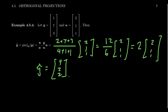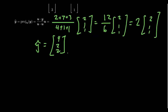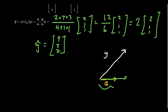So the orthogonal projection y-hat is the vector [4, 2, 2]. Drawing the picture: we have vector y, vector u, and y-hat is twice as long as u in that direction. This forms a right triangle, so we ask: what is the other vector completing the triangle? That other vector, with arrowhead pointing up, should be y minus y-hat.